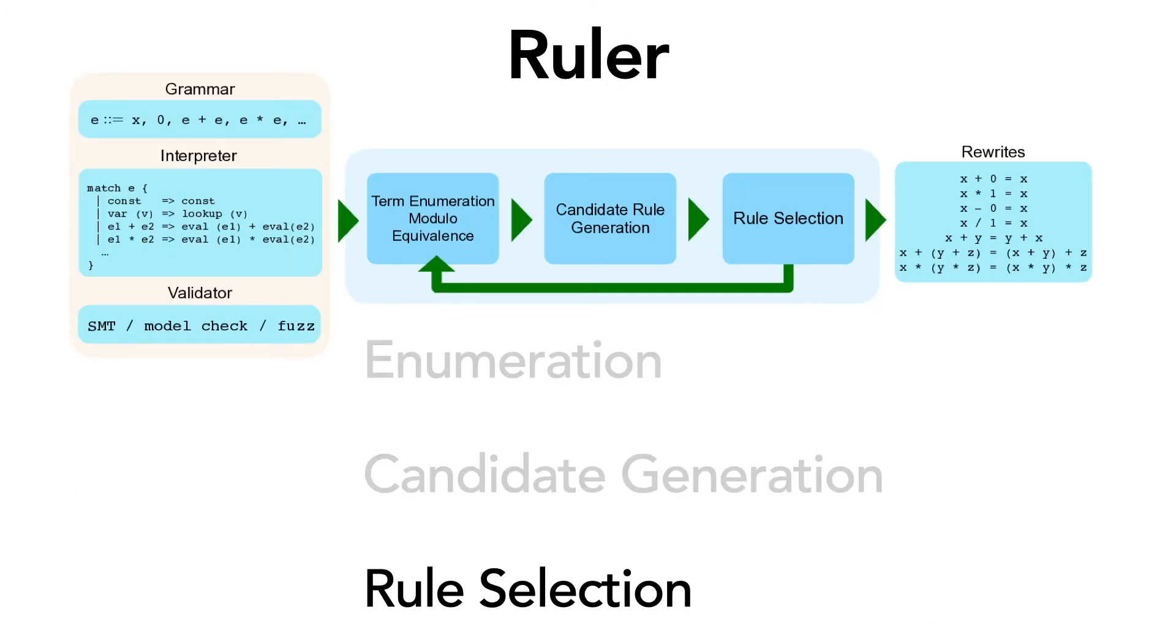Candidate generation often generates thousands or even hundreds of thousands of candidates. Ruler, therefore, uses a novel minimization algorithm that also uses equality saturation to find a small set of useful rewrite rules from this giant candidate pool.